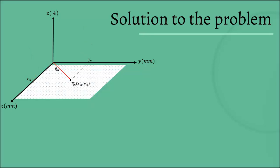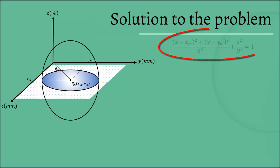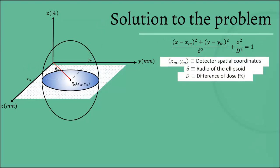And evidently, it also has a position vector RM. Around this point, we generate an ellipsoid of revolution, which its equation is the following. Where we have XM and YM are the spatial coordinates of each detector.